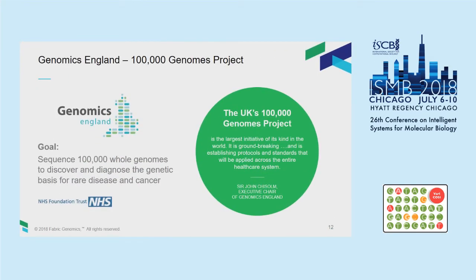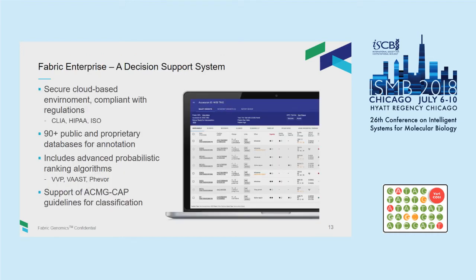Does this work? The data I'm going to show comes from the 100,000 Genomes Project as part of being a provider for Genomics England, which is sequencing 100,000 people as part of healthcare — half of those genomes are rare genetic diseases. We provided Genomics England with our decision support system: a cloud-based solution encompassing all the relevant annotations, embedding VVP, VAAST, and PHEVOR within the interface to use phenotype information provided as part of the process.